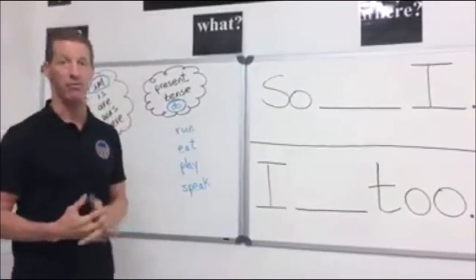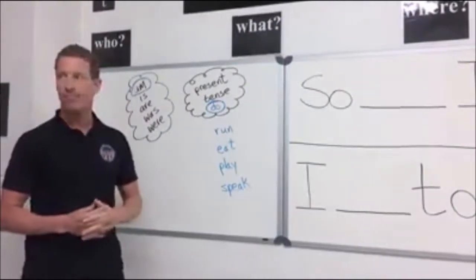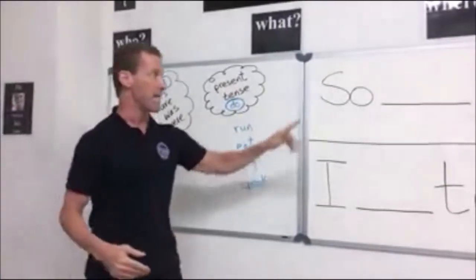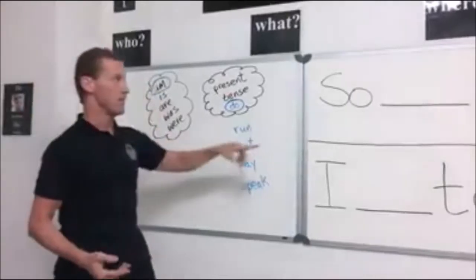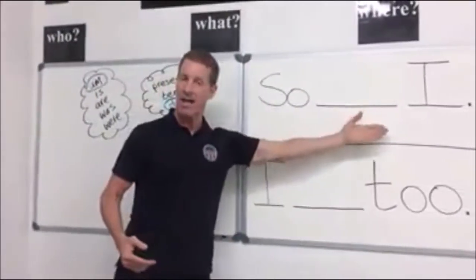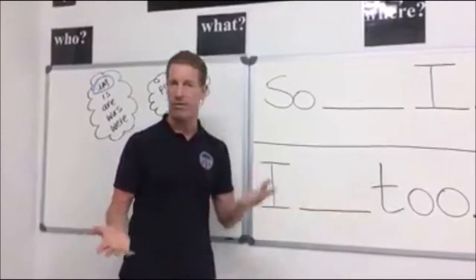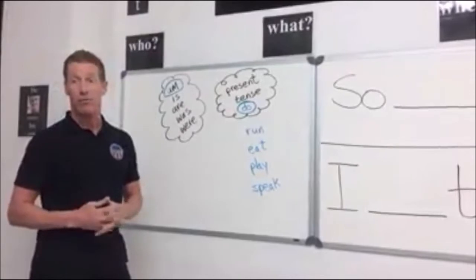For example if we use to be verbs if I say Maria is hungry I want to say it's the same for me I say to be verbs Maria is hungry I use am I say so am I or I am too both are correct.